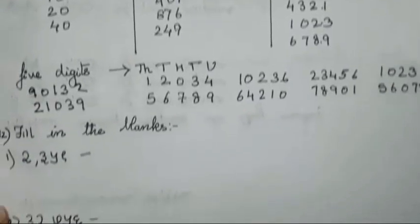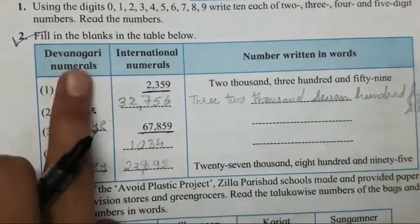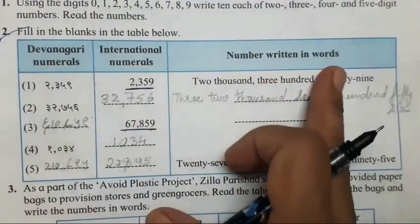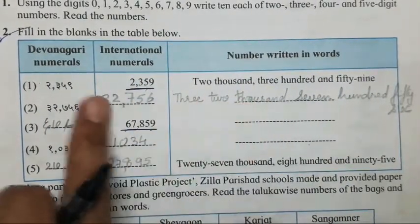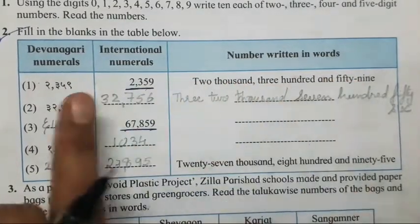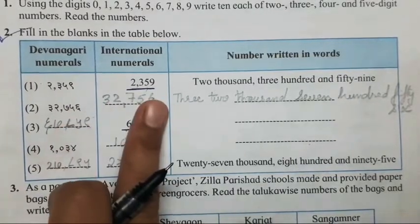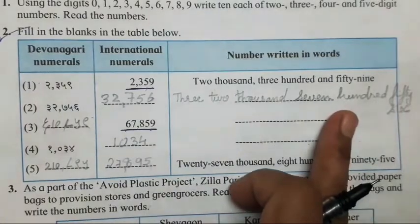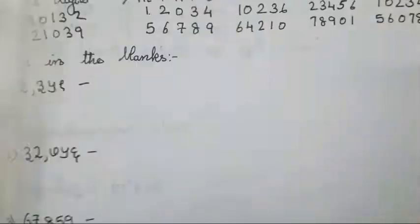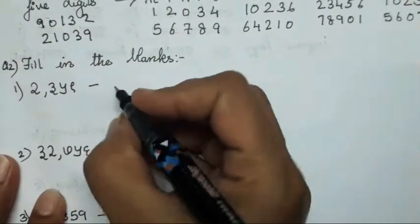Now let's move on to the next question: fill in the blanks. These questions have Devanagari script, international numbers and numbers written in words. Something has been given and you all have to fill in the remaining one. The first one is done for you; the second one is given in Devanagari numerals — you all have to write the international numbers and numbers written in words. You all can complete it in the form of a table.